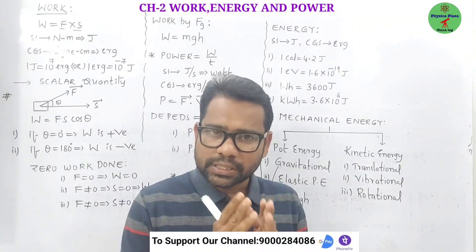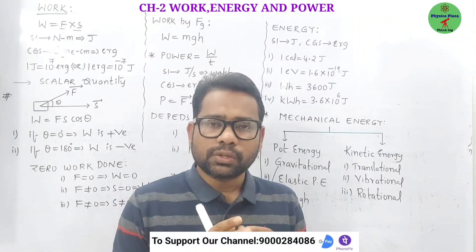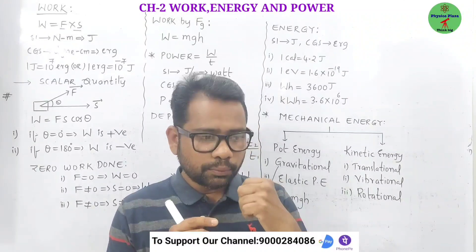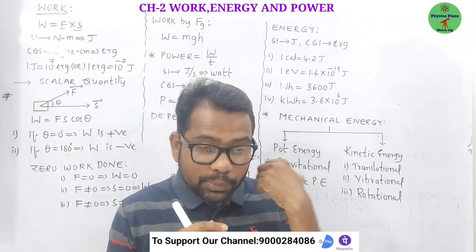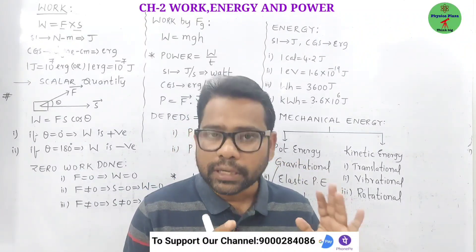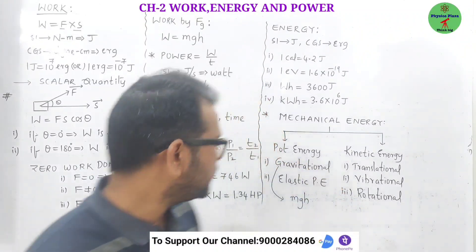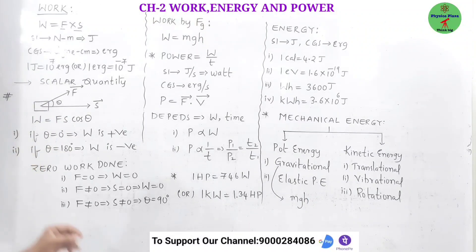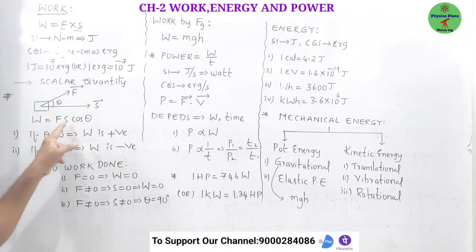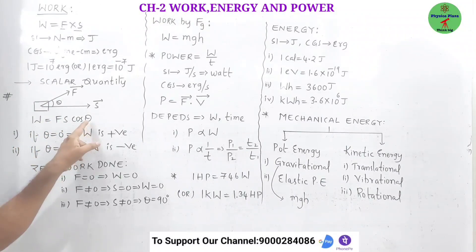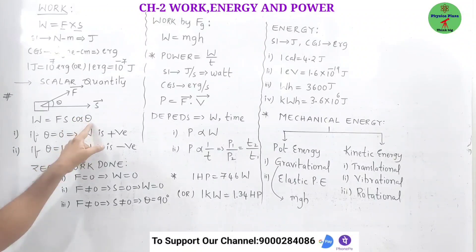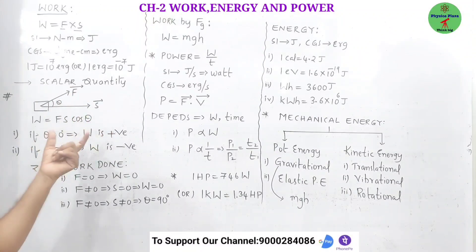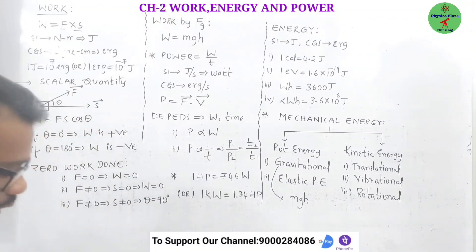It is not compulsory that a body always be displaced in the direction of the applied force. In some cases, the body may not be displaced in the direction of the applied force. In that case, we calculate W = Fs cosθ, where theta is the angle between force and displacement.